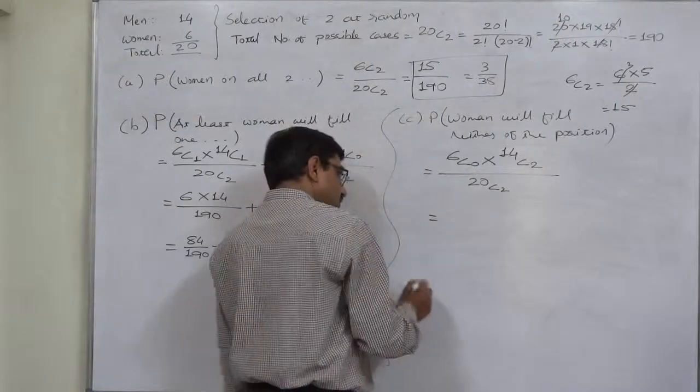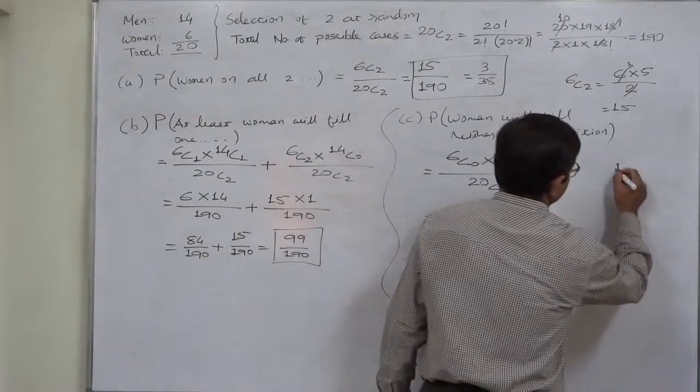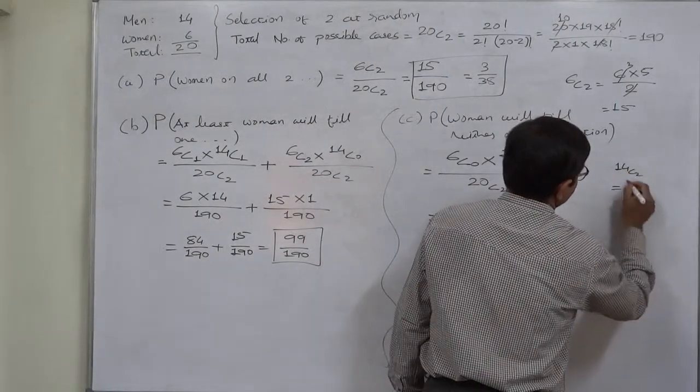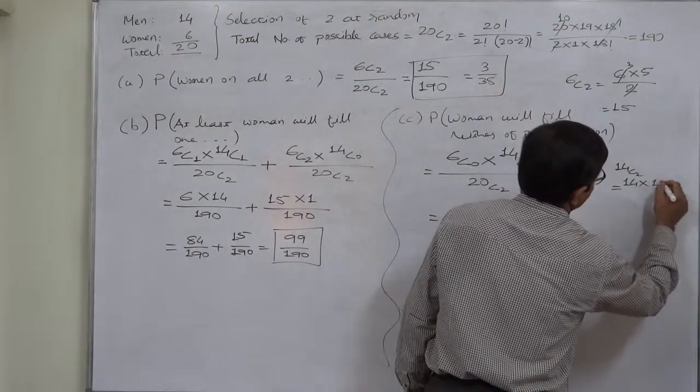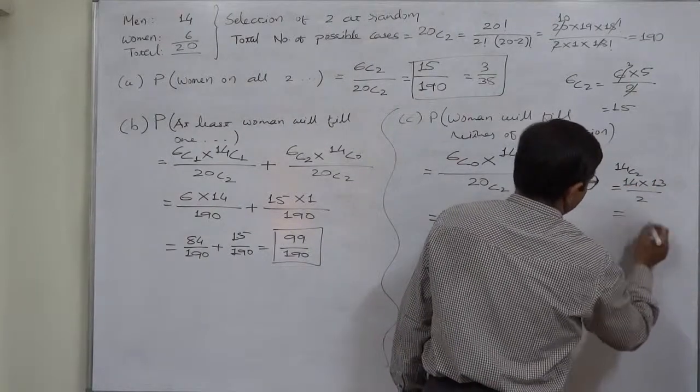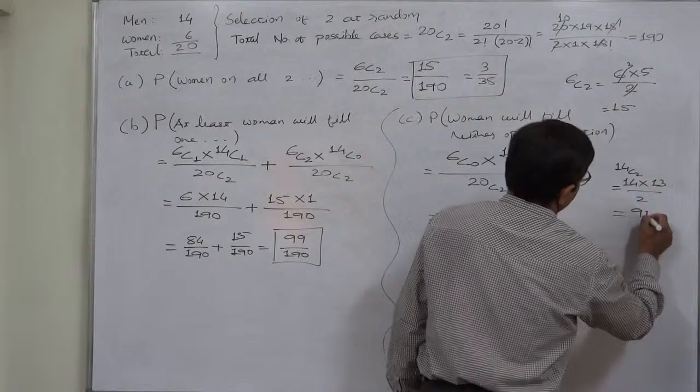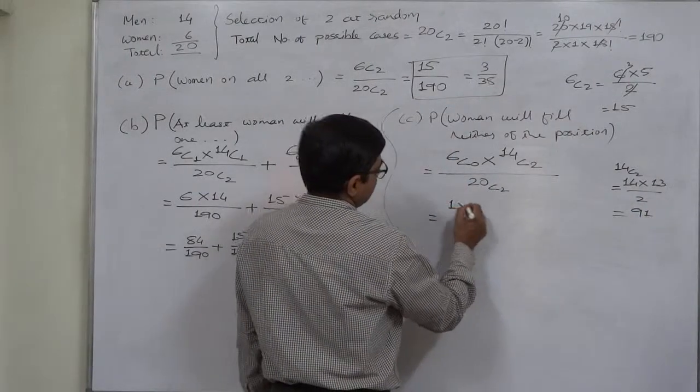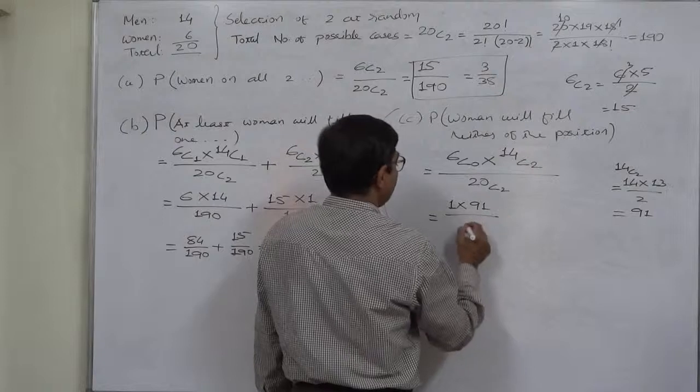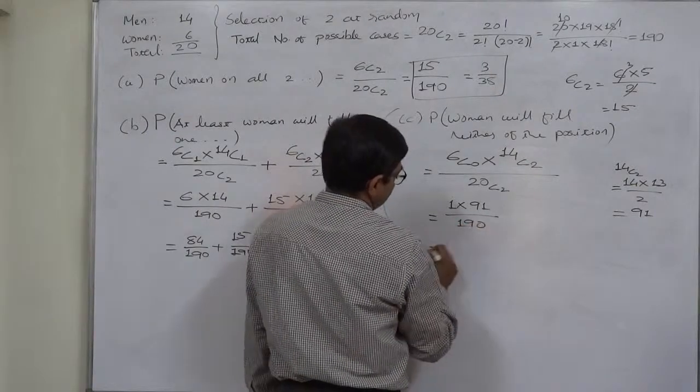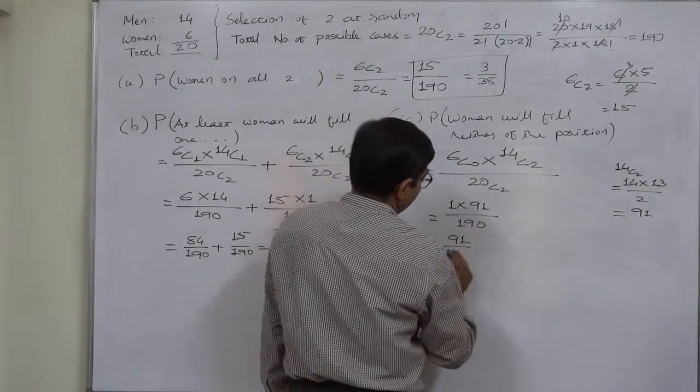Now what is 14C2? 14C2 equals to 14 into 14 minus 1 divided by 2, that is 91. So 1 into 91 divided by 190. That means it is 91 upon 190.